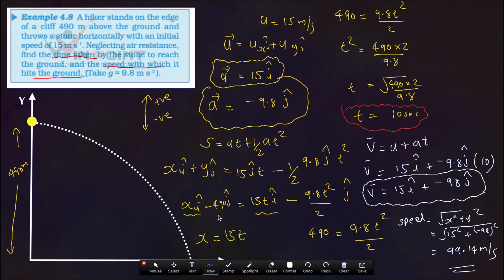What is the reason for this negative 490J? Because displacement is in downward direction. That is Y component.